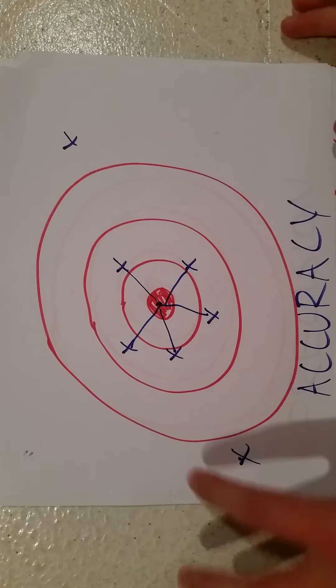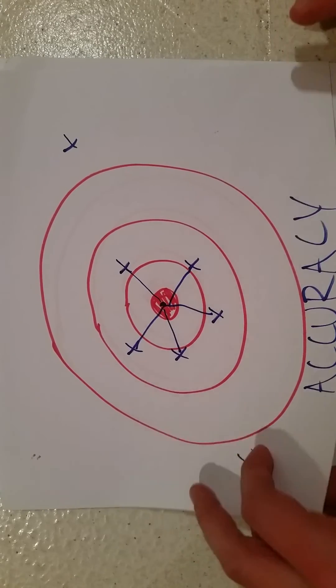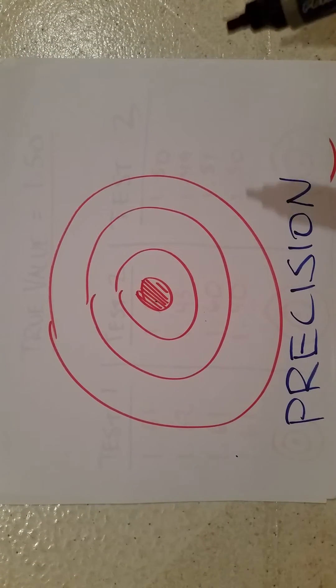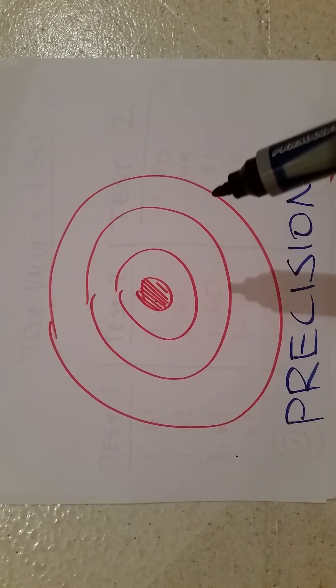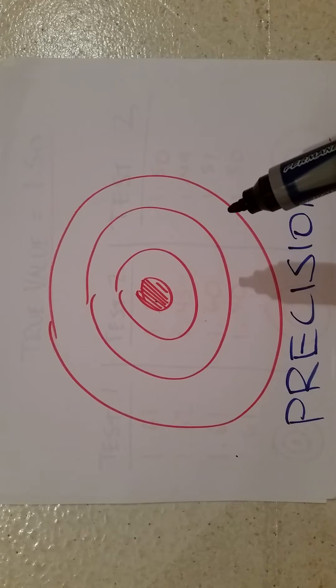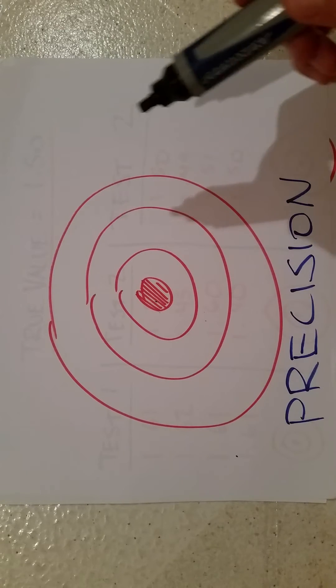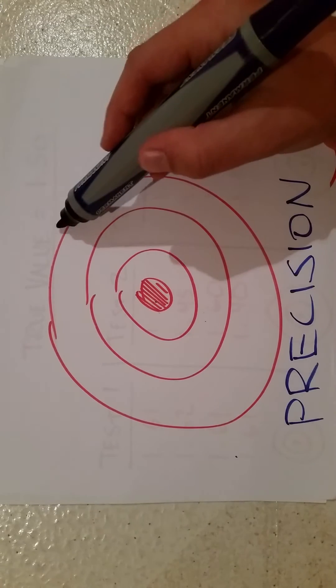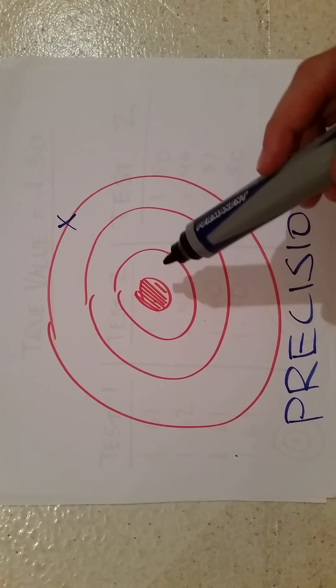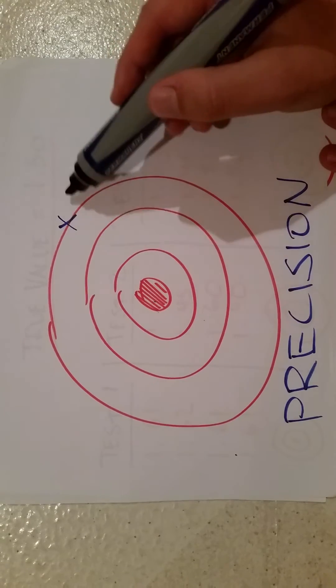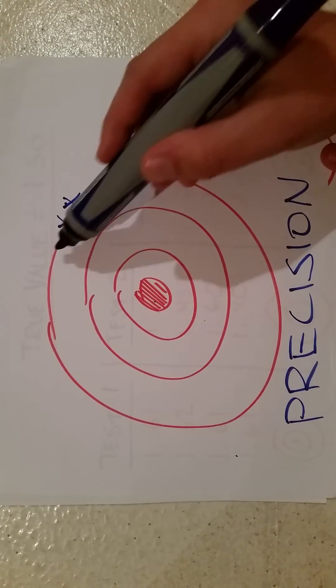Now keep that in mind when you compare that with precision. Precision is how close a sequential or a following shot gets to the original shot. So on this bullseye, let's say that we shot our first arrow here, not very accurate right? Look how far away it is, especially compared to our last example.